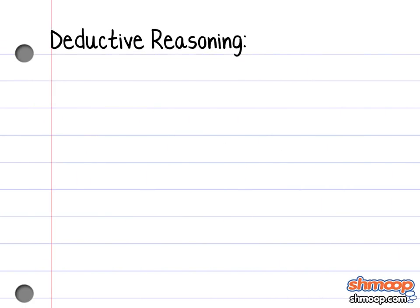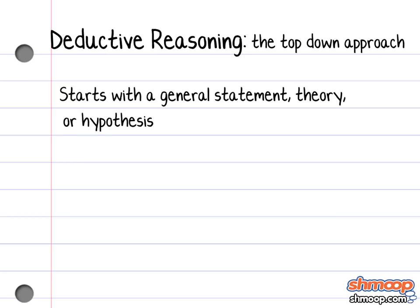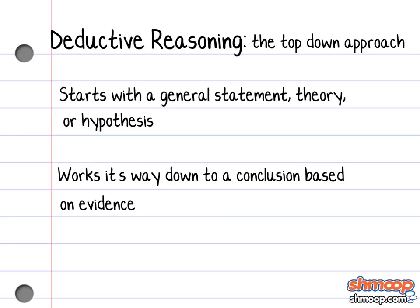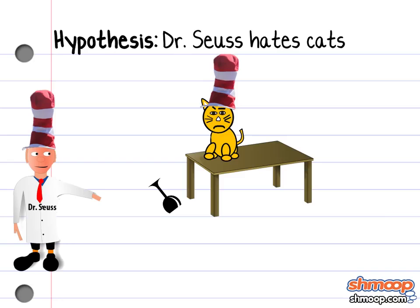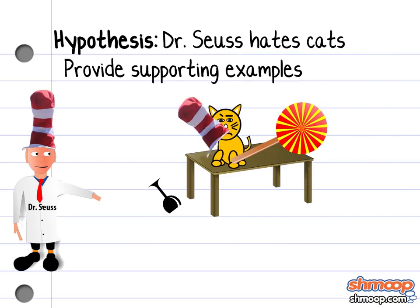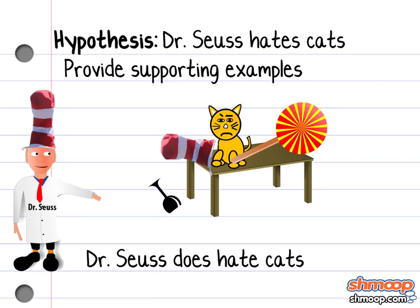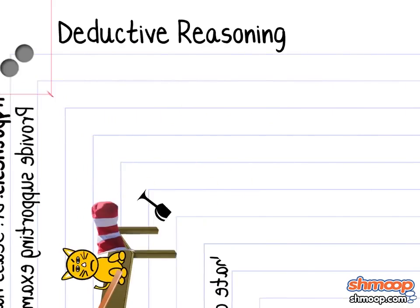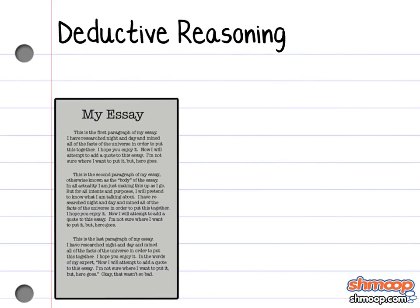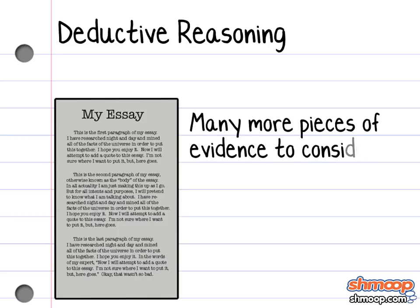Deductive reasoning, otherwise known as the top-down approach, starts with a general statement, theory, or hypothesis, and then works its way down to a specific conclusion by examining various pieces of evidence. For example, if you hypothesize that Dr. Seuss hates cats and you provide examples from The Cat in the Hat that you feel support that hypothesis, you can deduce that Dr. Seuss does, in fact, hate cats. And let's not even get started on how he feels about Thing 1 and Thing 2. Of course, it's a little more complicated when applied to an essay, because there are many more pieces of evidence to consider. But you get the idea.